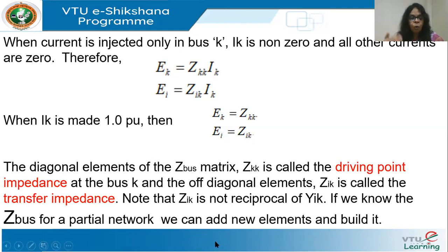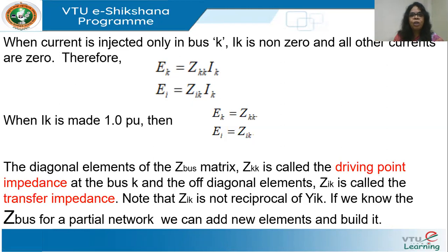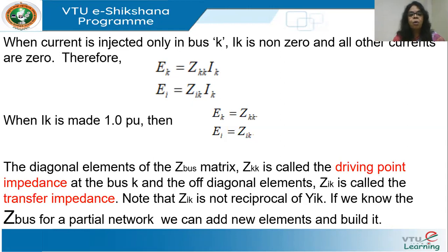The way the algorithm is built is as follows: we assume we know the Z bus for a partial network and keep adding elements and building it. You start off with no element — your partial network is a network with zero elements. Then you take the first element and modify the matrix, then add the second element, the third element, and so on. That's why it's called the Z bus building algorithm — you build it one by one, element by element.